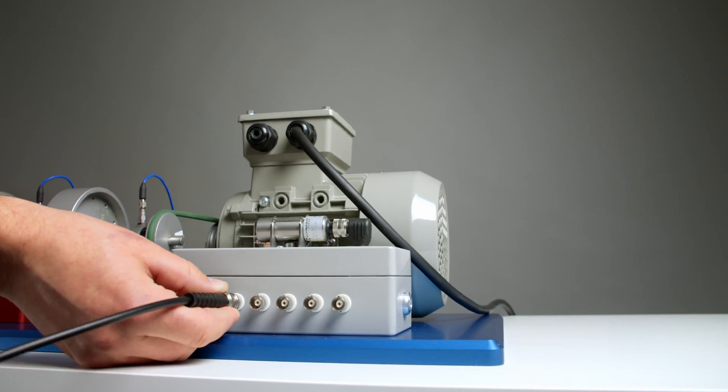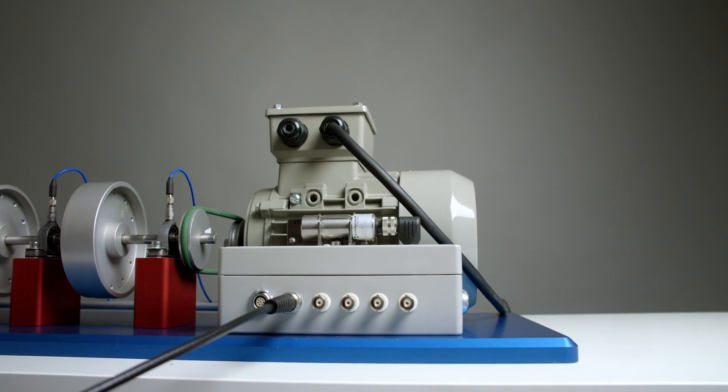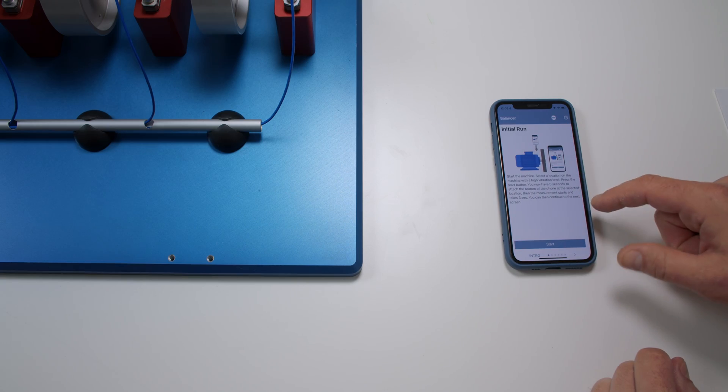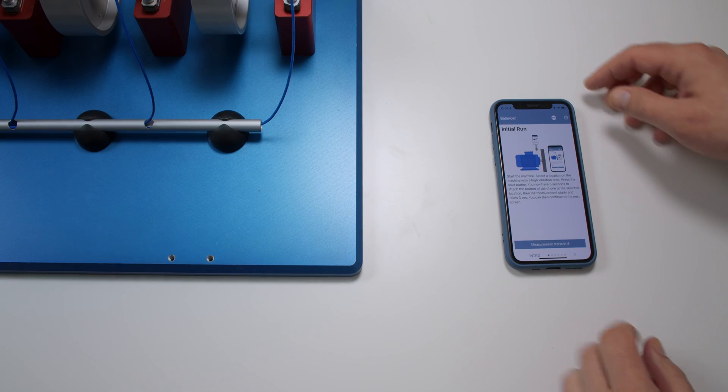I take our VA5 Pro vibration analyzer and I see the demo rig vibrates around two millimeters per second. I will measure initial vibration using the app now.